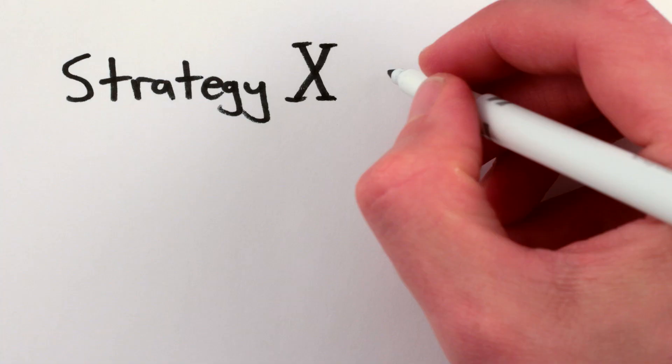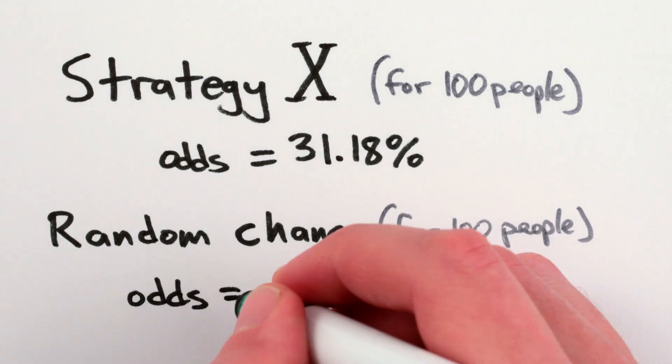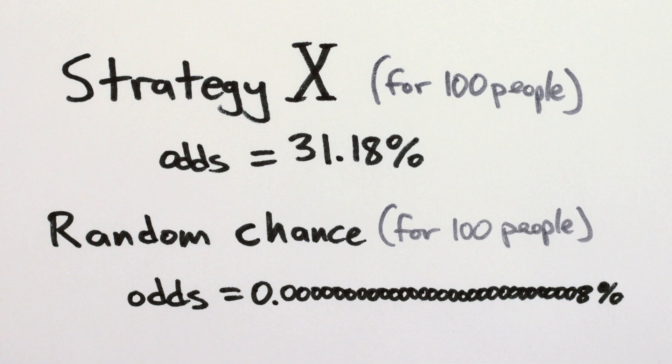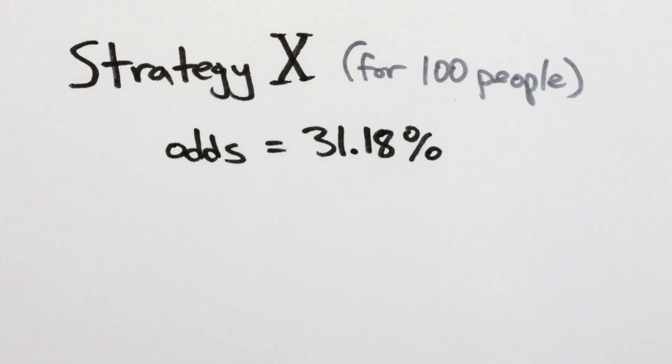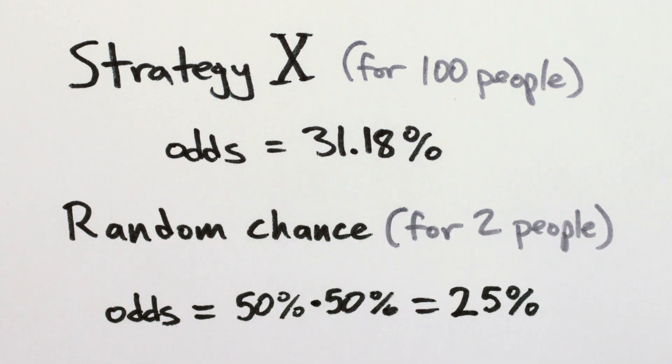However, it turns out that there is a strategy that results in the gamblers winning over 30% of the time. This strategy is so good that you're more likely to win using it than if just two people out of 100 picked randomly, since a half times a half is 25%, and this strategy wins 30% of the time.